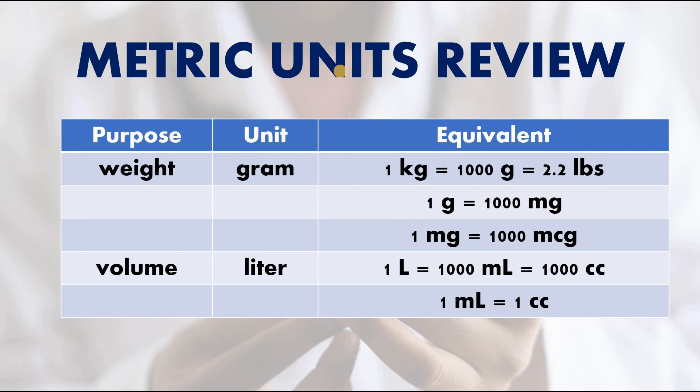Let's review the metric units. When dealing with pharmacology or medications, we focus on weight and volume. In this table you'll see weight and volume with their respective units of measurement and conversions. For weight — used with tablets — the unit is grams. 1 kilogram equals 1,000 grams, and 1 kilogram equals 2.2 pounds. 1 gram equals 1,000 milligrams, and 1 milligram equals 1,000 micrograms.